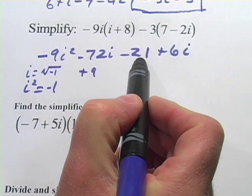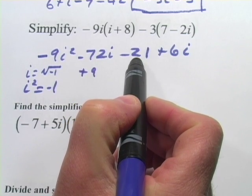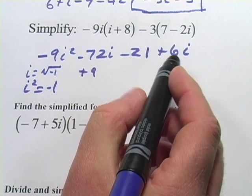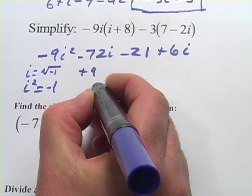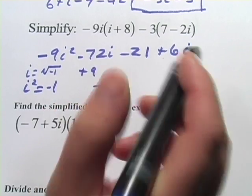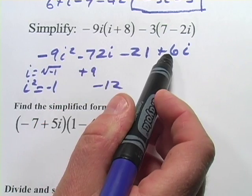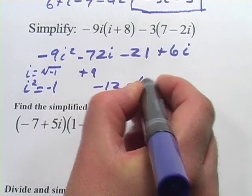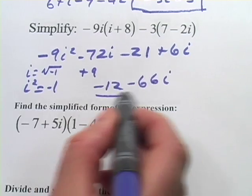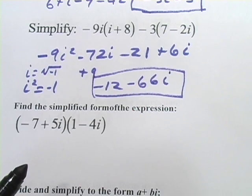And we have, let's see, a -21 here, so that is going to make this a negative 12. And then we have -72i and a positive 6i, so that's going to be -66i. And that is done, we've simplified that one.